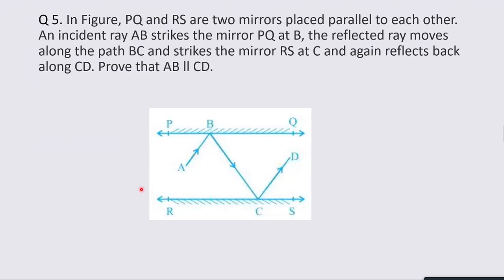In the next question, PQ and RS are two mirrors placed parallel to each other. An incident ray AB strikes mirror PQ at point B, and the reflected ray moves along the path BC and strikes mirror RS at C, then reflects along CD. We need to show that AB ∥ CD. To solve this, we draw normal lines at B and C — these are DE at B and CF at C.